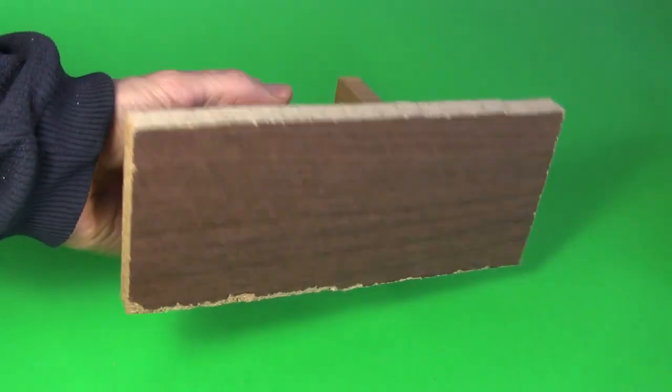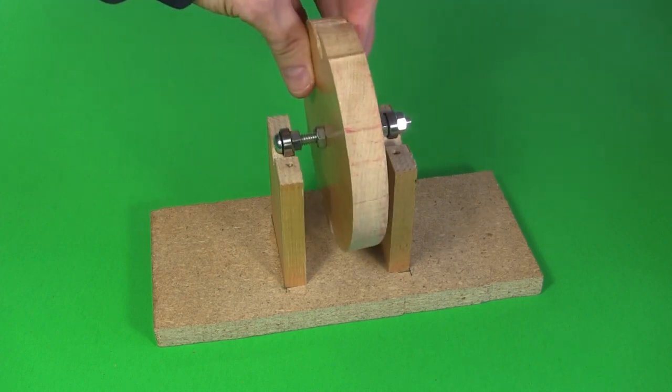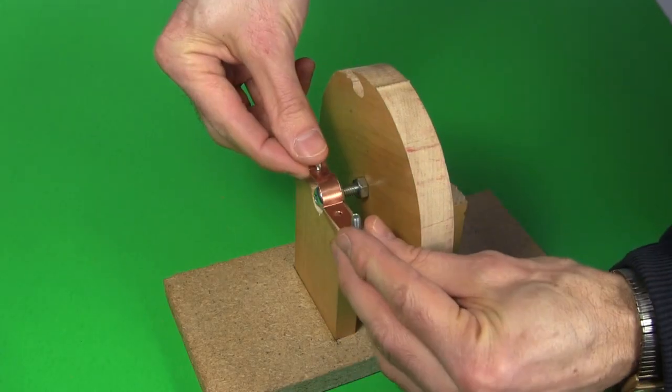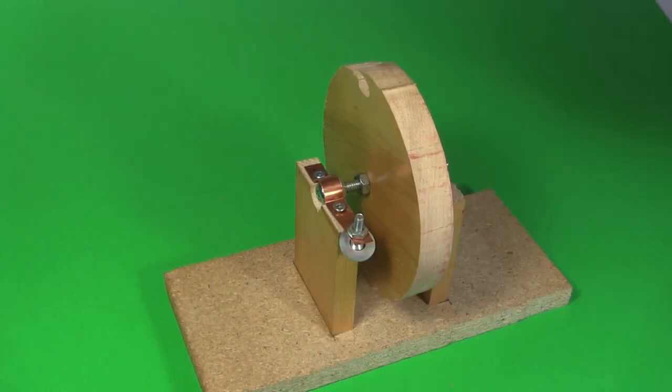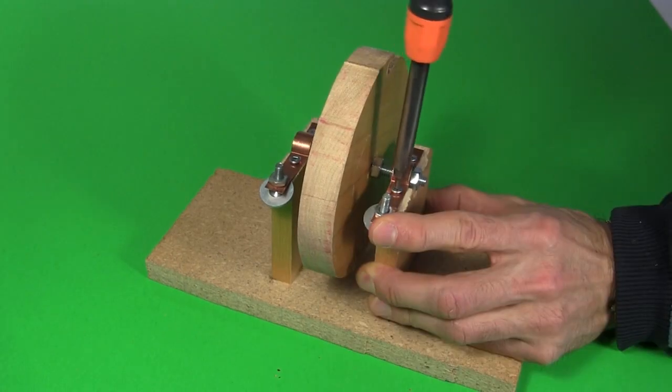And here's the wooden base with the vertical supports glued in place. I sit the rotor on it. I screw the first copper strip over a bearing to both hold it in place and to make electrical contact with it. And I do the same with the other copper strip.